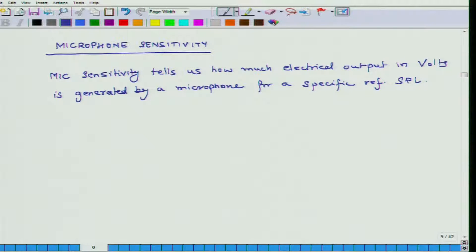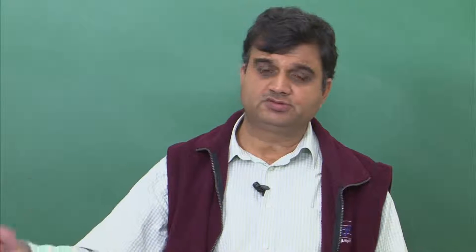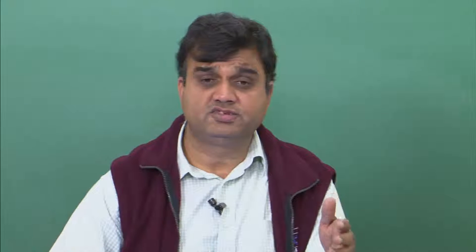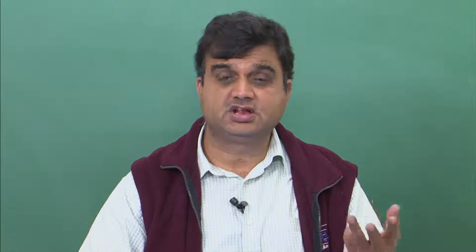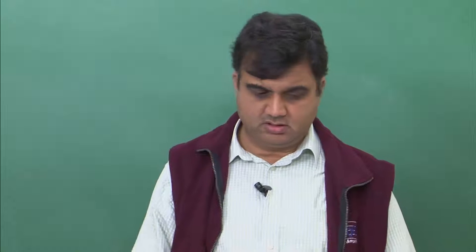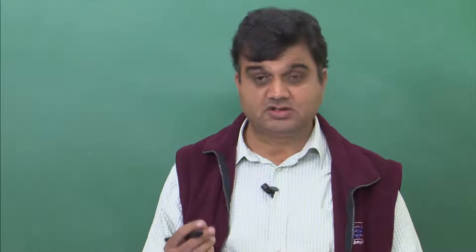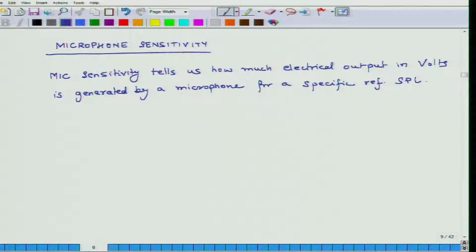Suppose I have a reference SPL of 1 Pascal and there is one microphone which produces 1 volt of electrical signal, and there is another microphone which is producing 3 volts of electrical signal. Then the second microphone is 3 times more sensitive — it is more sensitive than the first one. The units of this particular parameter are also in decibels and we will define it.